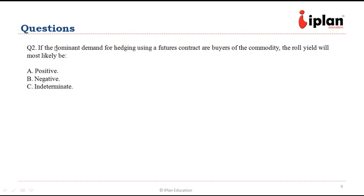Let us look at question number two. It says if the dominant demand for hedging using futures contracts are buyers of the commodity, the roll yield will be positive, negative, or indeterminate.